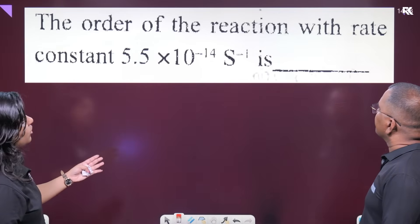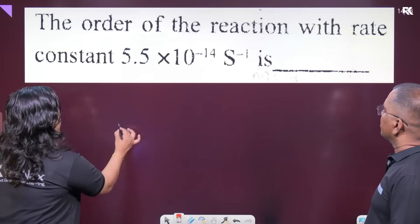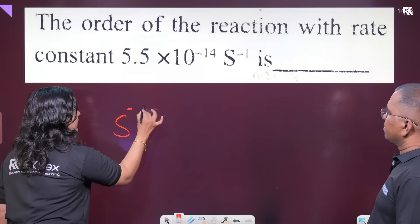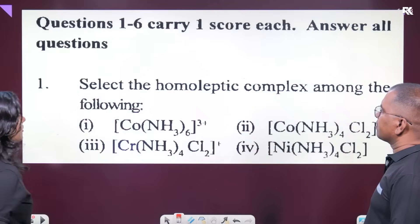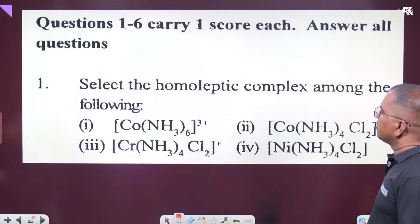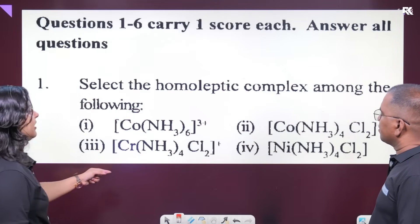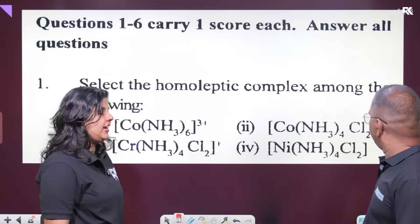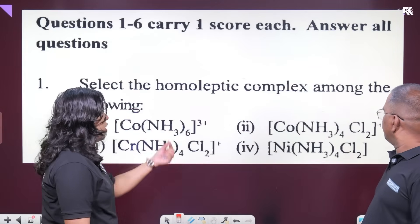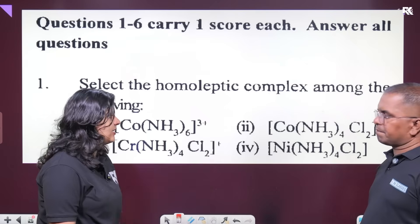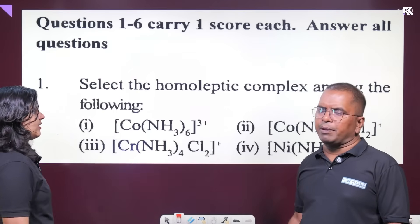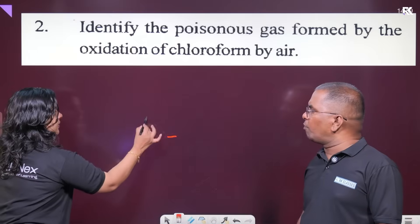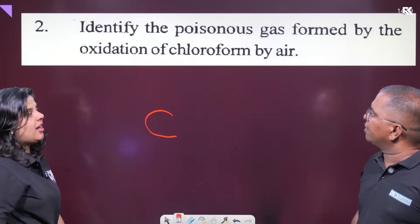The rate constant unit is second inverse — it is a first-order reaction. Select and identify the homoleptic complex: a complex with the same type of ligands is a homoleptic complex.